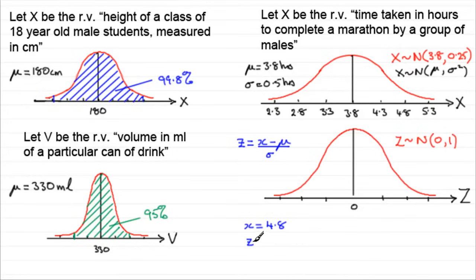So if x is 4.8 and I do this transformation here, z becomes the observed value 4.8 minus the mean, which was 3.8. And then we divide it by the standard deviation sigma, which was 0.5.